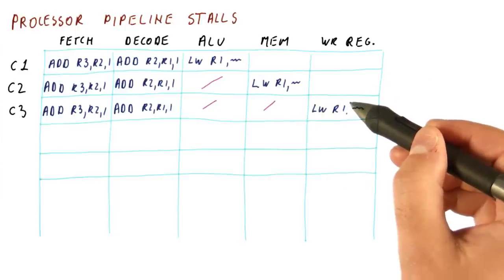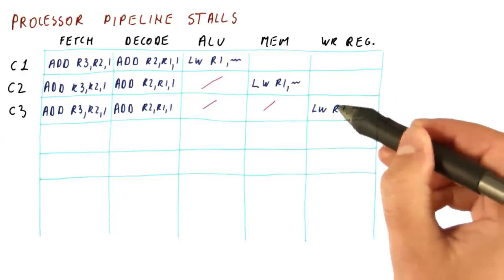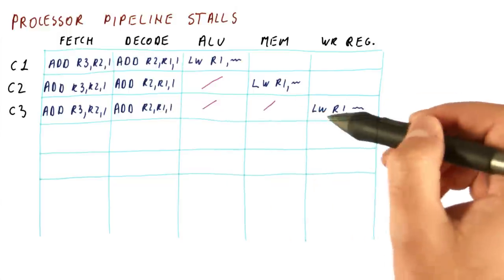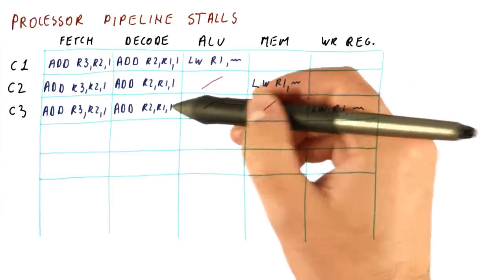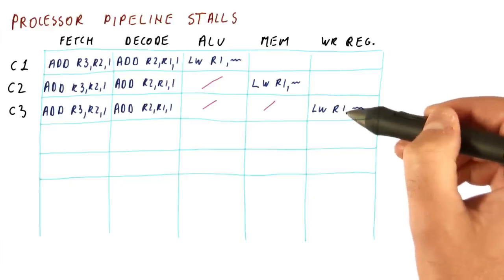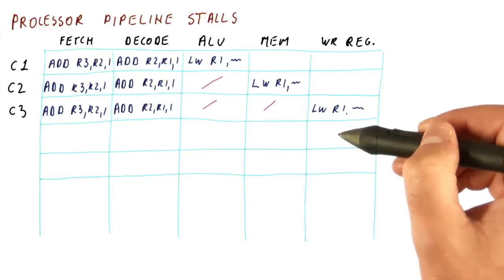In this cycle, it could be that, for example, the load is writing to R1 in the first half of the cycle, and this add is reading R1 in the second half of the cycle. So next cycle, the add can move on. But it could be that the load actually takes a full cycle to write the result in which case we will have another cycle of stalling.